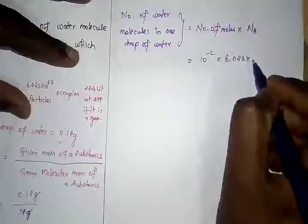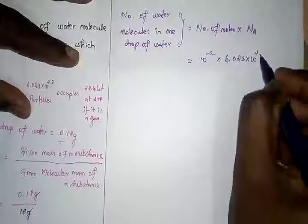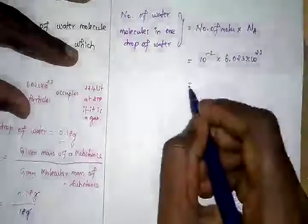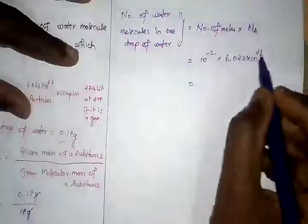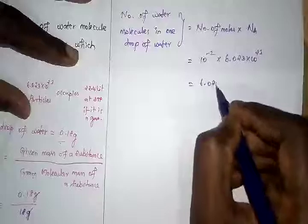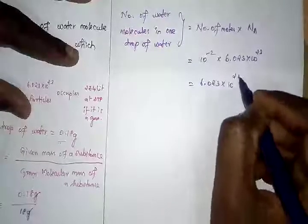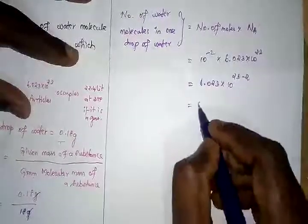Now 10 to the power - the base is same, so power we can add it. 6.023 × 10^(23 - 2).